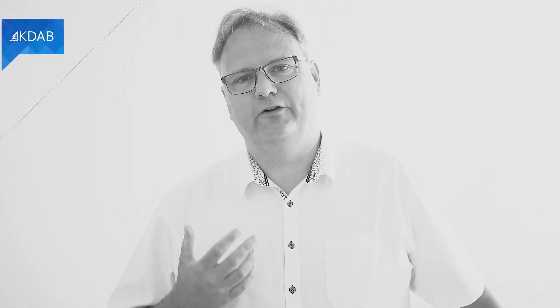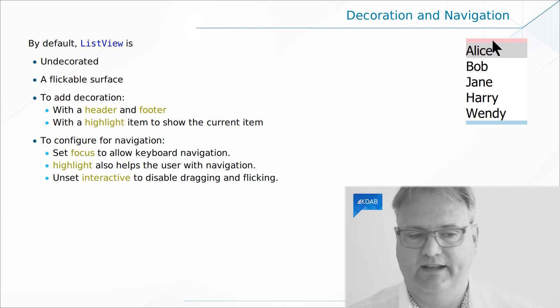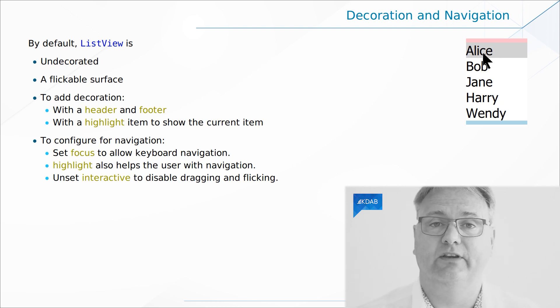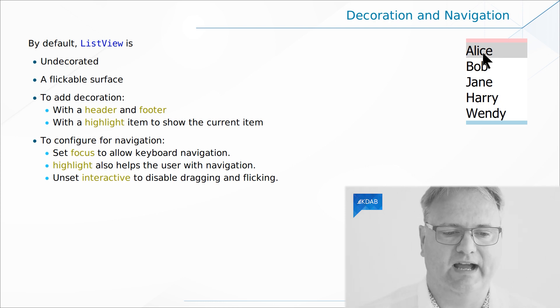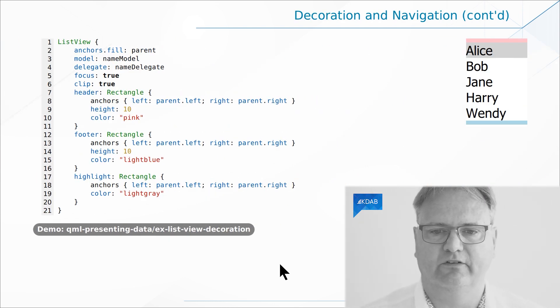I have to ask for forgiveness — I have zero artistic skills, so when I draw a decoration it's a blue and a pink rectangle. That's all I can do. And that's what you see in the screenshot: I have a decoration at the top specified using a property called 'header', and a footer down here. The current item is highlighted using another property called 'highlight'.